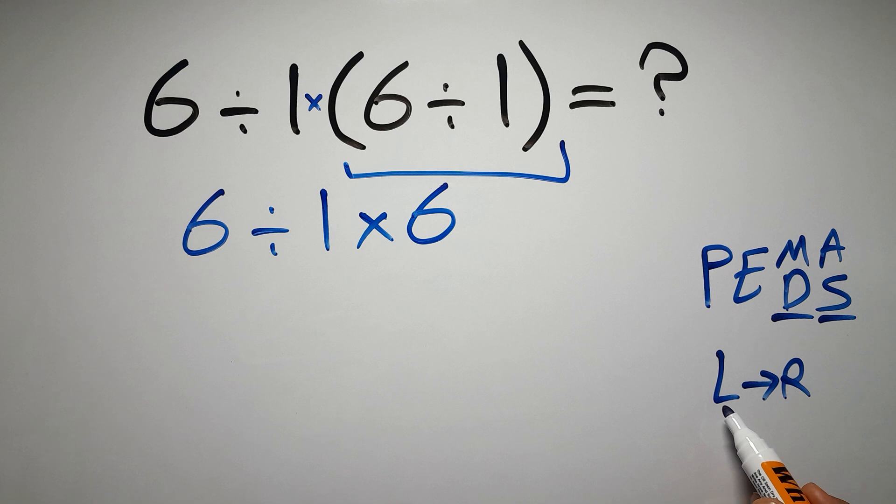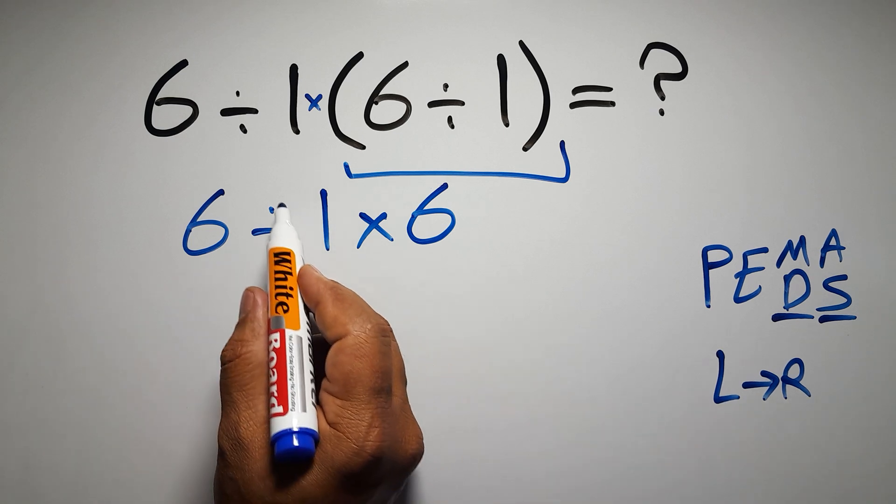As I said, multiplication and division have equal priority and we have to work from left to right. So here first we have to do this division then this multiplication.